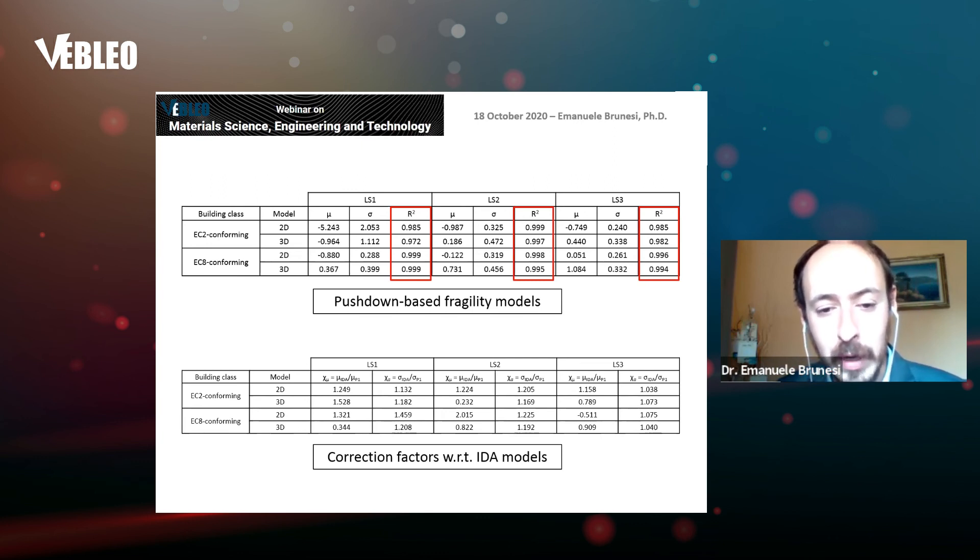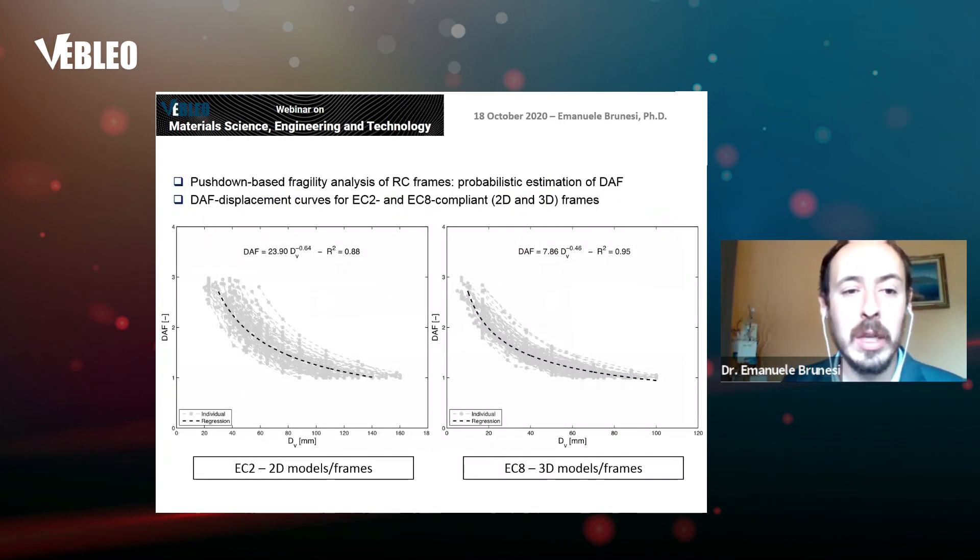We provide this table where correction factors with respect to IDA models are provided, because pushdown analysis is a fast and appealing approach nonetheless. The reason for the mismatch is that the dynamic amplification factor provided by code is not so accurate. We performed another set of pushdown analysis to compute our own dynamic amplification factor for the two portfolios and different numerical representations.